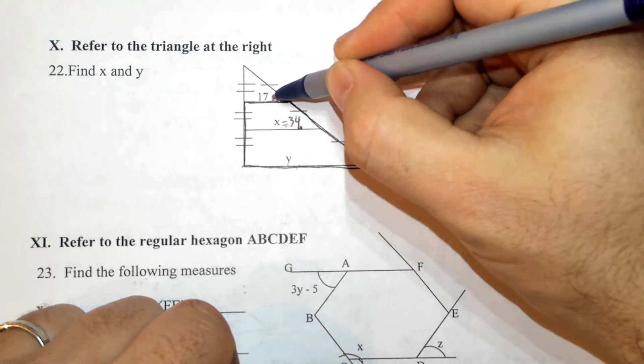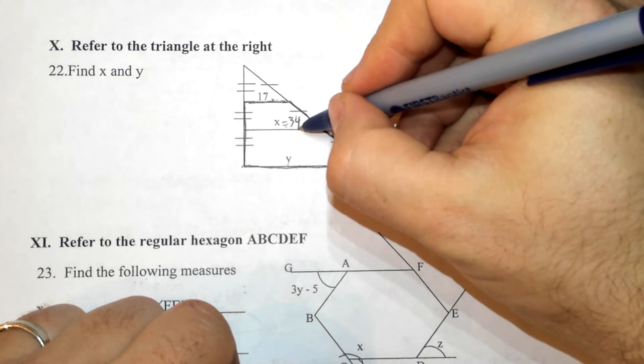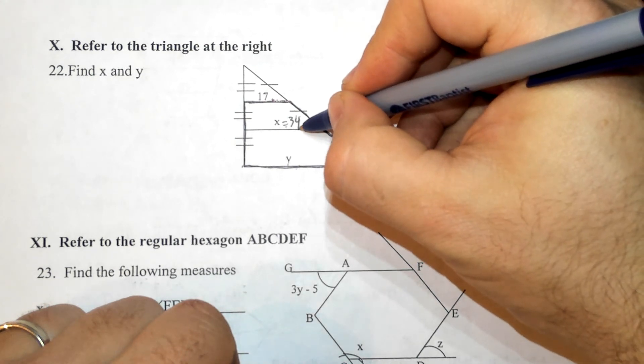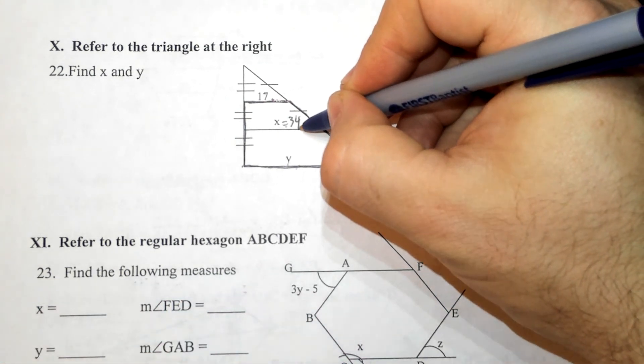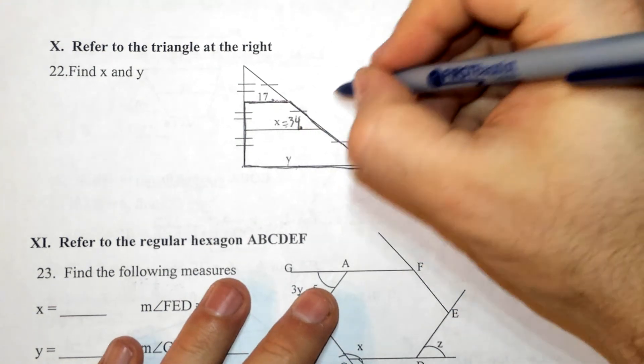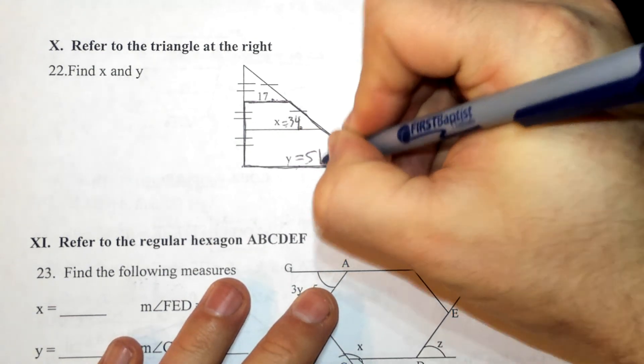34 times 2 is 68. 68 minus 17 is 51. So y is just going to be 51.